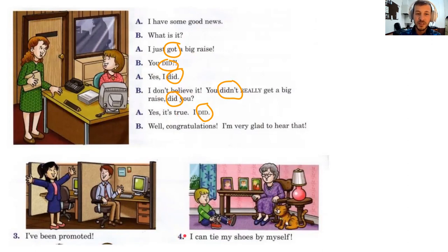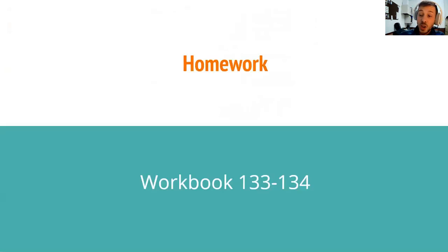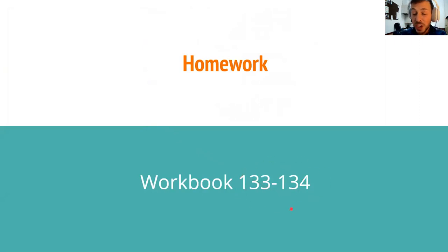Last one — number four: you begin. [pause] What is it? You can! I don't believe it — you can't really tie your shoes by yourself, can you? Well, congratulations, I'm very glad to hear that. We're going to continue practicing — you have homework: workbook pages 133 through 134. Good luck, thank you.